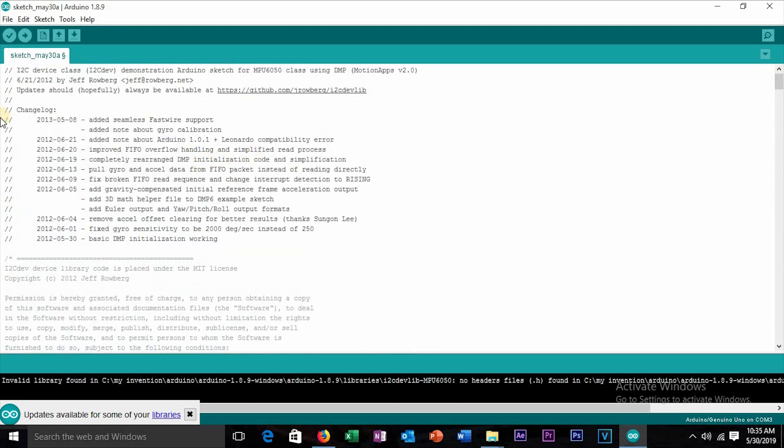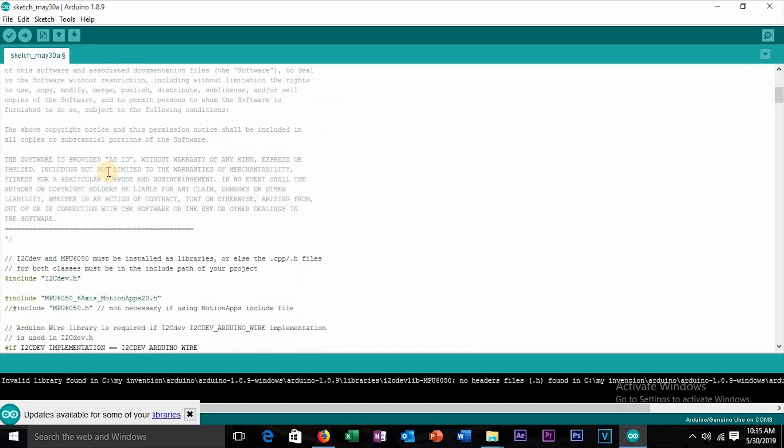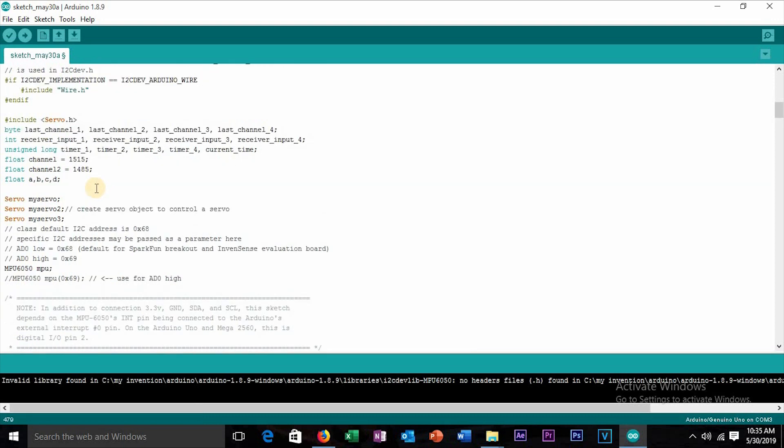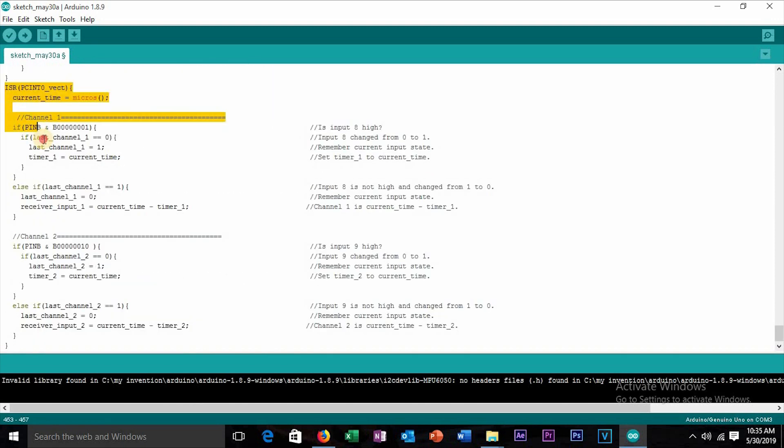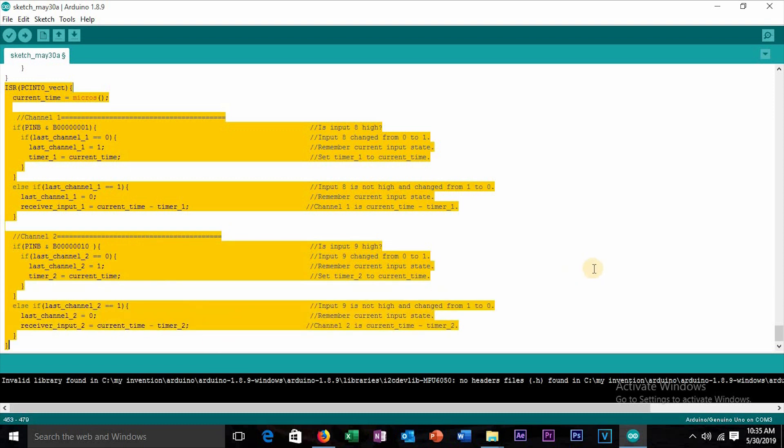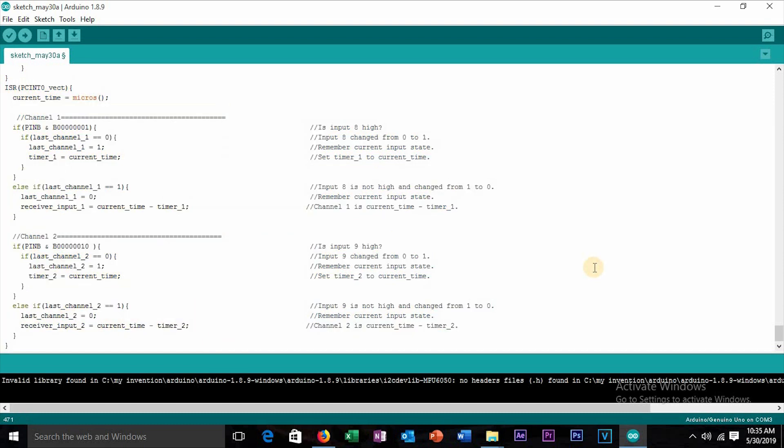This is simply MPU 6050 servo control code, and I added some more code, like three servos, PWM signal receiver, with interruption, which will work like this.